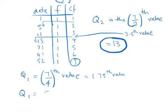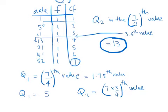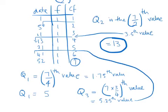Now we calculate Q3 in the same way. Q3 is the 7 times 3 quarters value. If we work out 7 times 3 quarters, we get 5.25. So it's the 5.25th value. We walk down the cumulative frequency and find where 5.25 would be — it's between 5 and 6 — then point to the next one, which is 41. So Q3 is 41.